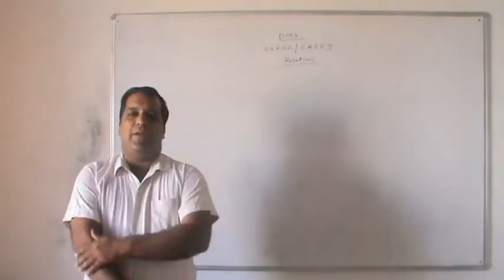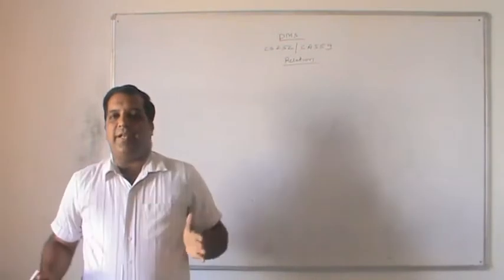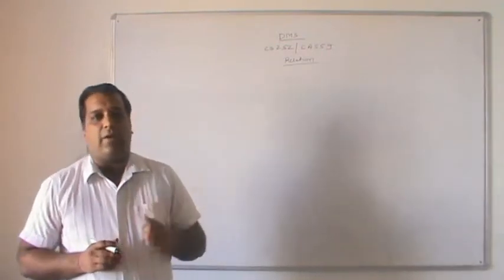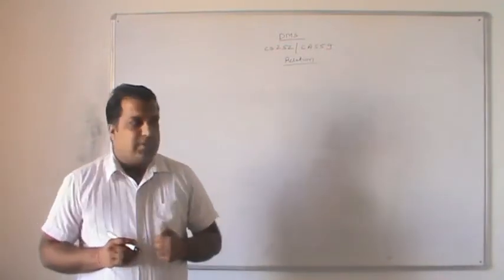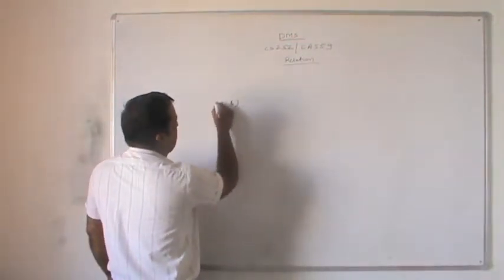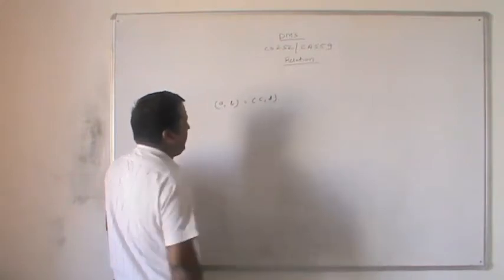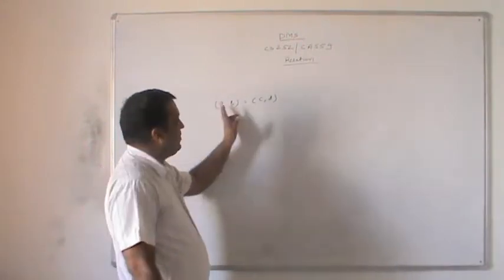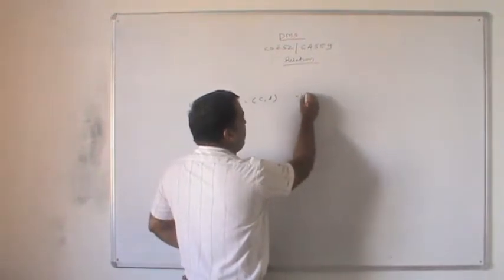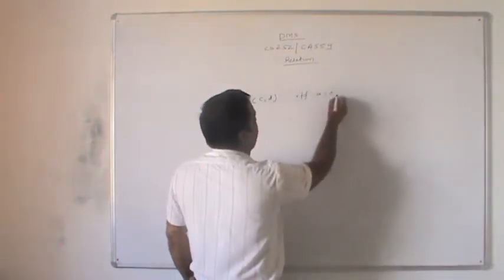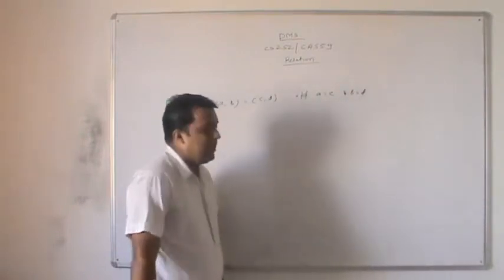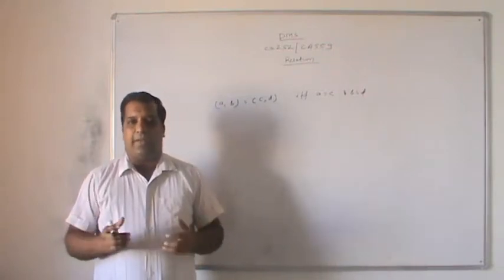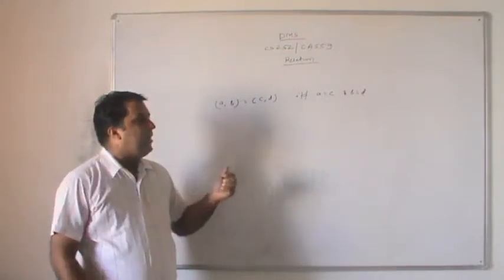Today we discuss about correlation — the existence and non-existence of connection between the ordered pair of objects in a definite order. That is called a relation. So here, we can say A, B which is equal to C, D. This is the ordered pair of A, B and it is the ordered pair of C, D.